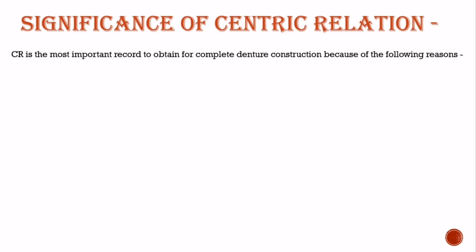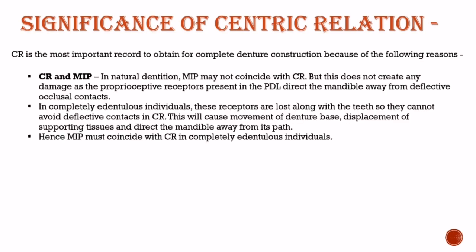Now let's know about the significance of centric relation. Centric Relation is the most important record to obtain for complete denture construction. In natural dentition, maximal intercuspal position may not coincide with centric relation, but this does not create any damage as the proprioceptive receptors present in the periodontal ligaments direct the mandible away from the deflective occlusal contacts. Whereas in completely edentulous individuals, these receptors are lost along with the teeth, so they cannot avoid deflective contacts in centric relation.